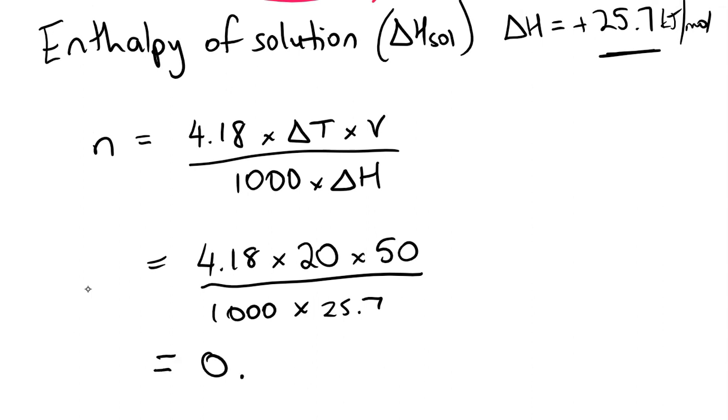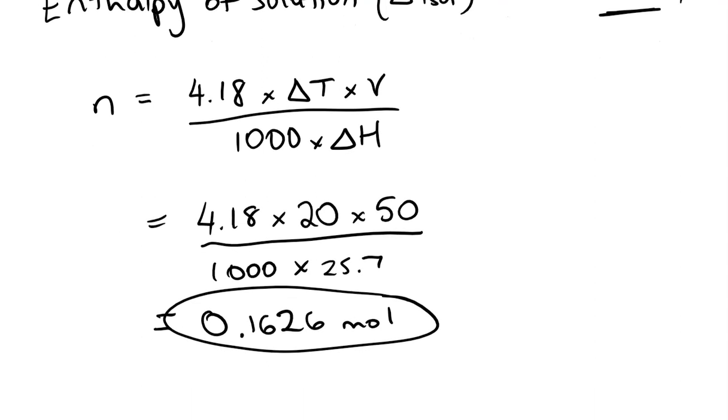If you put that in and work it out, you get a value for ammonium nitrate of 0.1626 moles. So that's how much we actually need of our ammonium nitrate.